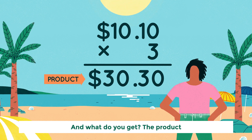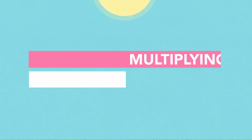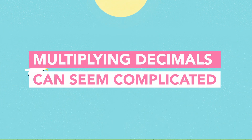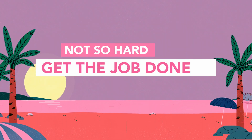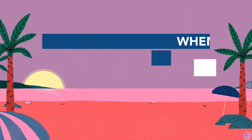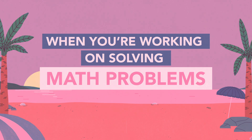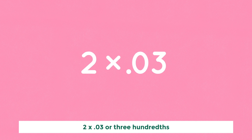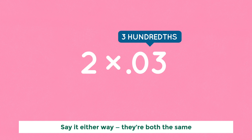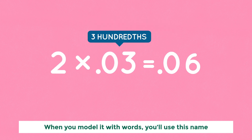And what do you get? The product. Multiplying decimals can seem complicated, but these strategies hopefully will make it not so hard to get the job done when you're working on solving math problems. Here's a whole number and a decimal to work with. When you model it with words, you'll use this name.